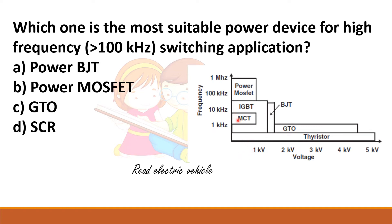If you want to use a device for both high power and high frequency applications, you have to use either IGBT or BJT. So the answer to this question is power MOSFET.